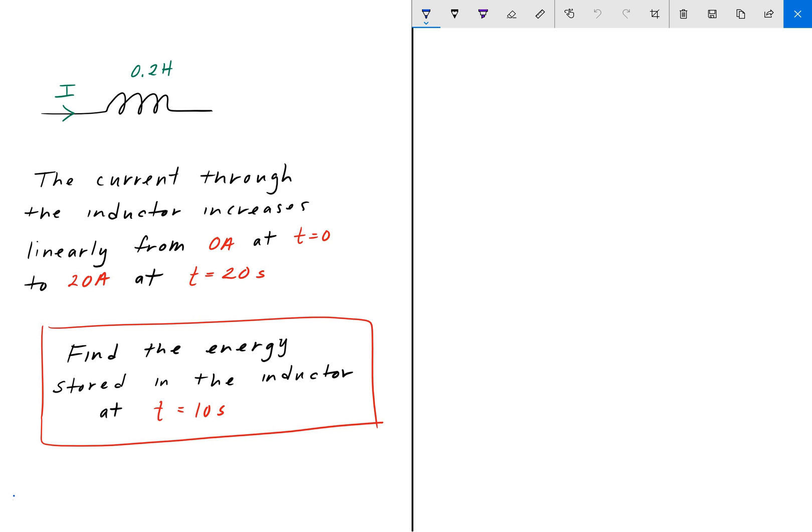Hey everyone, welcome back to Engineering Education. For this next problem, we have an energy storage problem. Suppose that we have an inductor of 0.2 henrys, and the current through that inductor increases linearly from 0 amps at t equals 0 to 20 amps at t equals 20 seconds. We're looking for the energy stored in the inductor at 10 seconds.